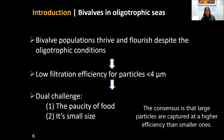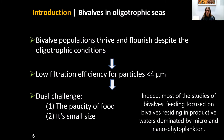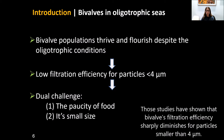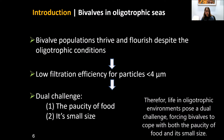The consensus is that large particles are captured at higher efficiency than smaller ones. Indeed, most studies of bivalve feeding focus on bivalves in productive water dominated by micro- and nanophytoplankton. Those studies have shown that bivalve filtration efficiency sharply diminishes for particles smaller than 4 micrometers. Therefore, living in oligotrophic water like the Mediterranean Sea poses a double challenge, forcing bivalves to cope with both the scarcity of food and its small size.